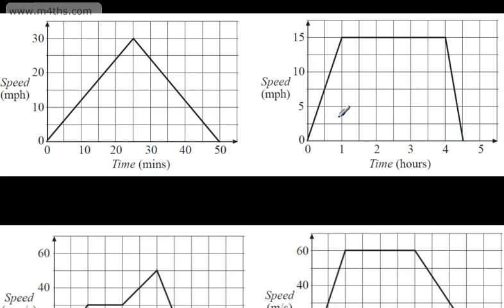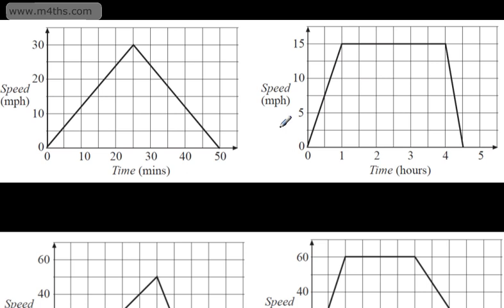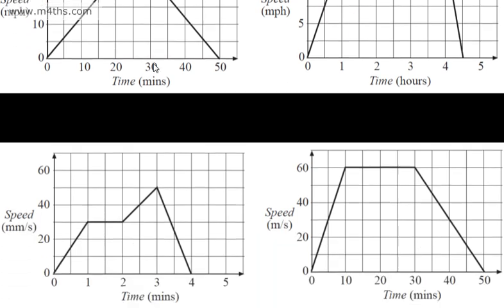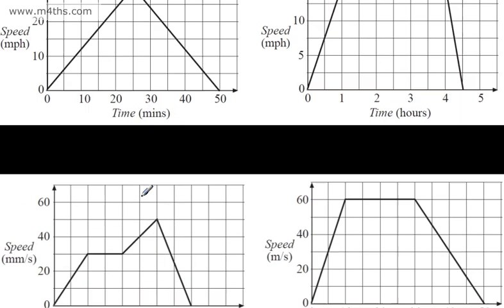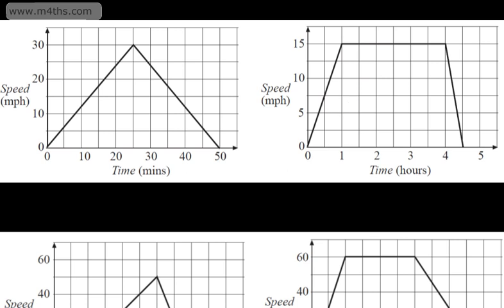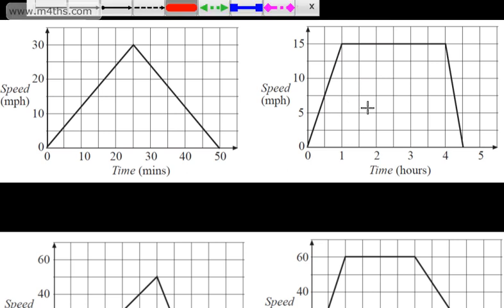I'm going to look at this one as the units are the same, and we're going to look at two key features of speed-time graphs. The first one is that the area under the graph is the distance covered. So if I can find the area of a trapezium or the area of a triangle, we can find the distance travelled. Let's go ahead and do that with this one.